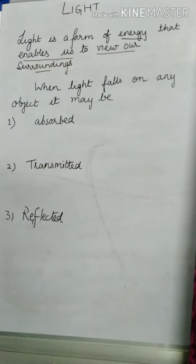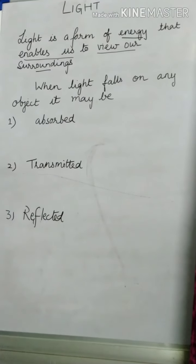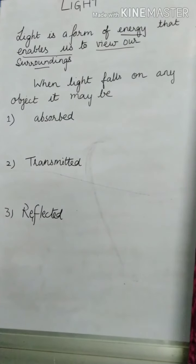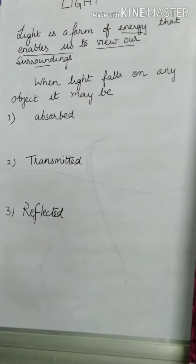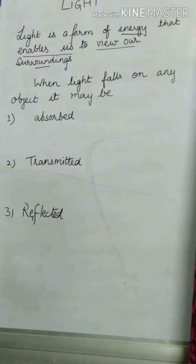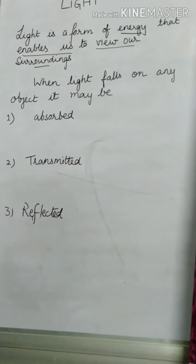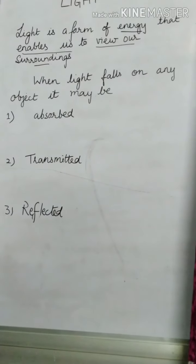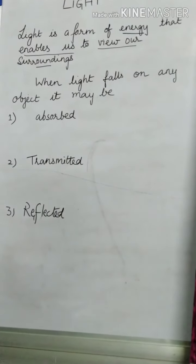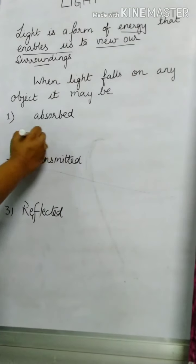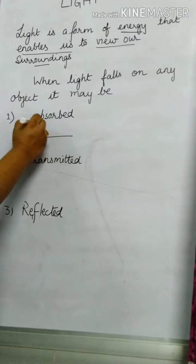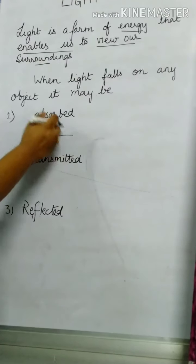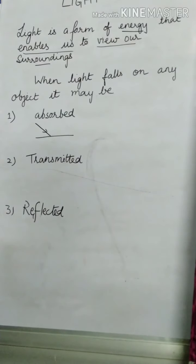When you have to see something, the essential thing is that the light should fall on that object. When light falls on an object, it may undergo any of these three processes. It may be absorbed — that means light falls on the surface and it is just absorbed by the surface.